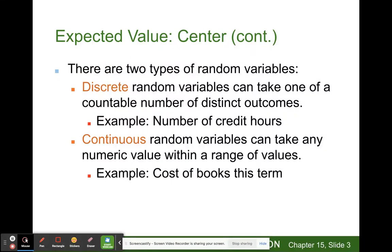There are two types of random variables. Discrete random variables can take one of a countable number of distinct outcomes, for example the number of credit hours. Discrete is countable whole integer numbers, usually positive.